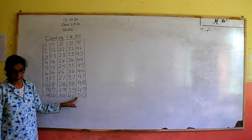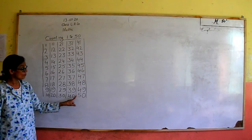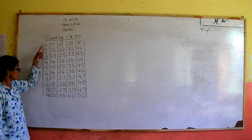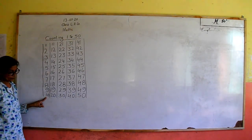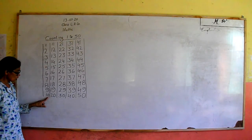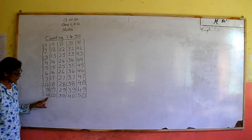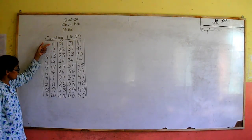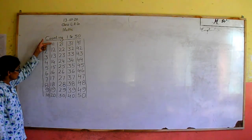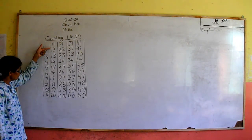Understand? One, twenty-three. One, zero — ten, twenty. Five, four, five.